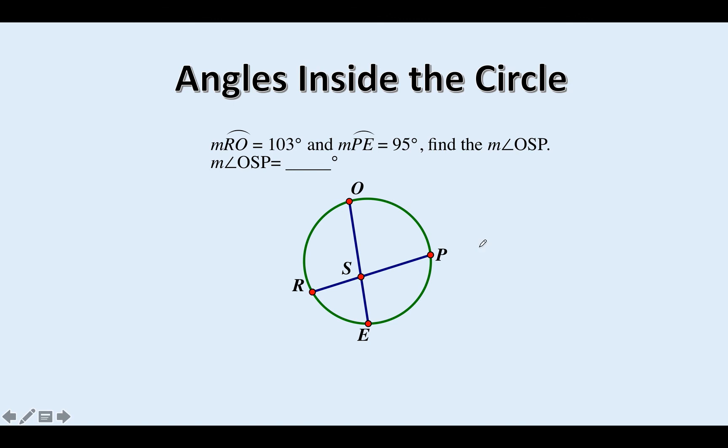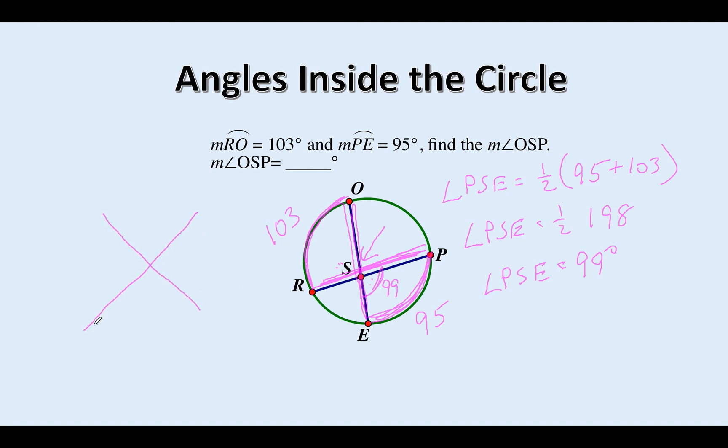Let's look at a little tricky problem here. So RO, here's RO right up here, 103. PE looks to be the other side of the bow tie, it's 95. So I'm going to finish my bow tie and write my formula. This angle here, angle PSE, is equal to one half that 95 plus the 103. So angle PSE is equal to one half of 198. Angle PSE is equal to 99 degrees. So this is 99, but I want OSP, I want this guy right here. Easy enough to do. If that's 99, if these two meet and this is 99, then you should be able to figure out this one here. And this one's going to be 81 degrees.